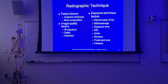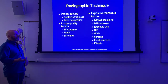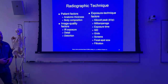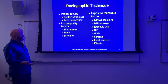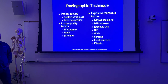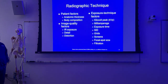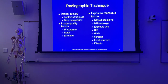Radiographic technique - now we're going to get into the patient factor. We're going to talk about thickness versus body composition; they're not necessarily the same thing. We'll talk about image quality factors, image receptor exposure in context of what happens as we change patient thickness and body composition, and how that gives us an appearance on detail and distortion. We'll also bring back KVP, MA, exposure time, SID, and throughout the semester we'll talk about grids, screens, focal spot size, and filtration.